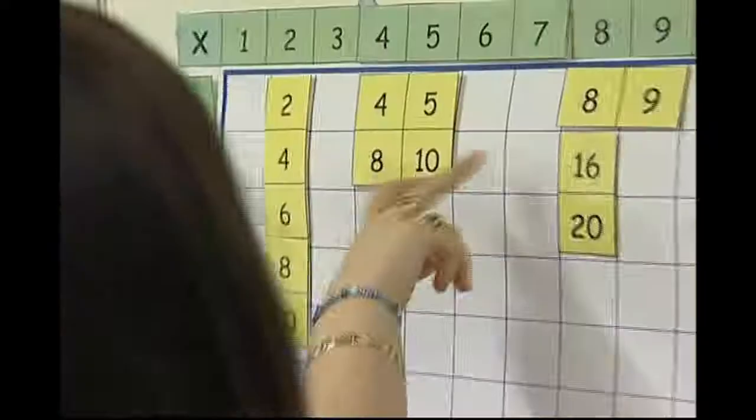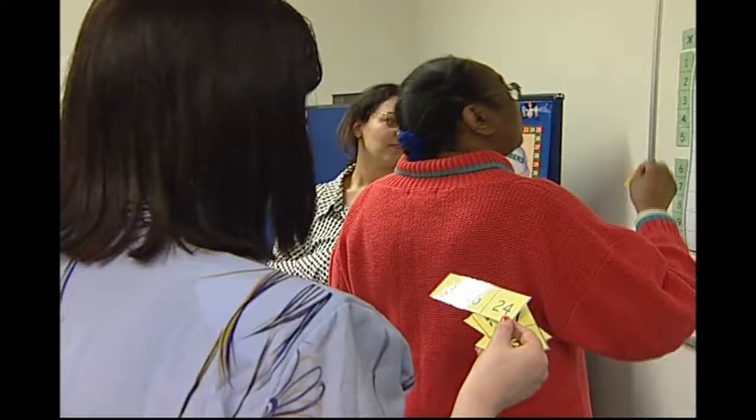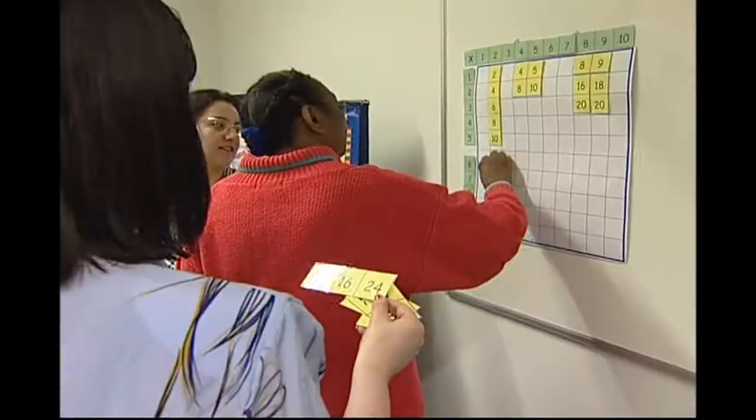Kelsey, are you using the method? This is seven. Because your seven times table is quite strong, isn't it?